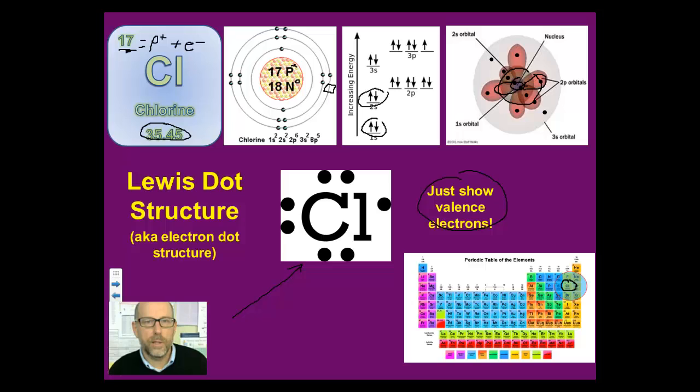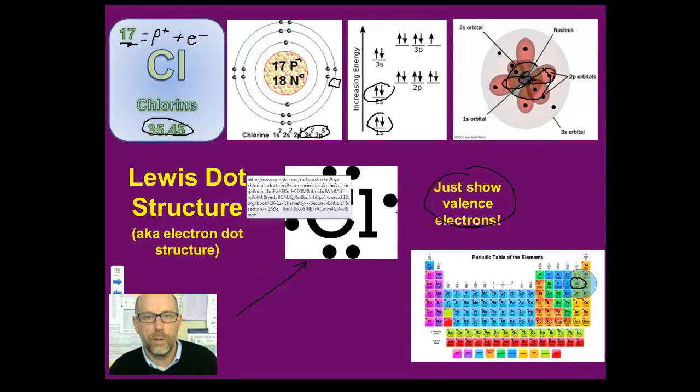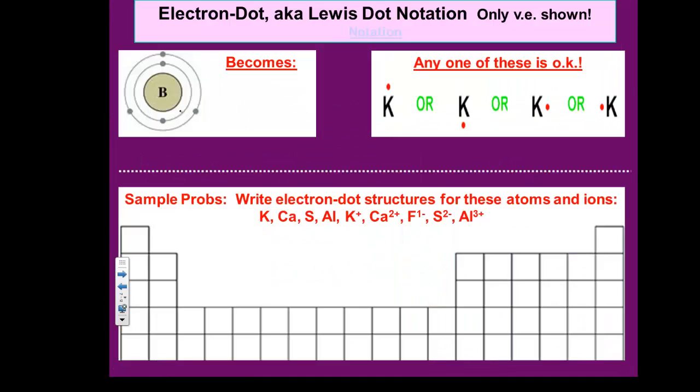So if you go back up to this, 1s2, 2s2, 2p6, 3s2, 3p5, those are the valence electrons right there. There are seven of them. So we write Cl and then we put seven electrons around it. One, two, three, four, five, six, seven.